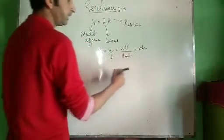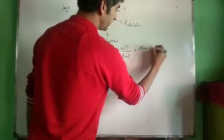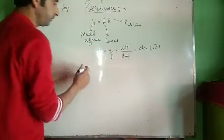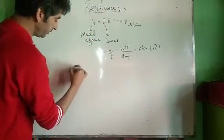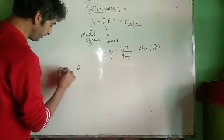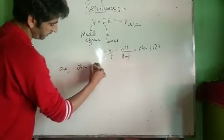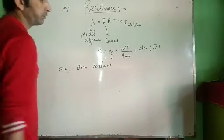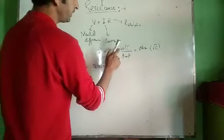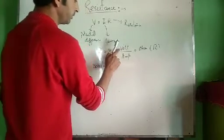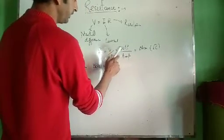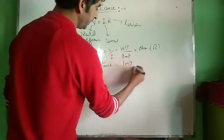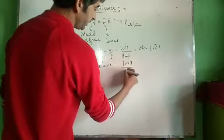Volt per ampere is called ohm, represented by omega (Ω). Now we define one ohm resistance: if the potential applied across a conductor is one volt and it produces a current of one ampere, then resistance is said to be one ohm.